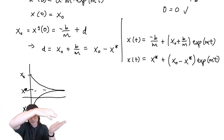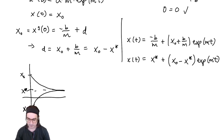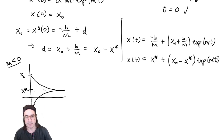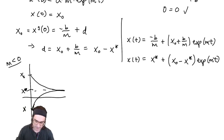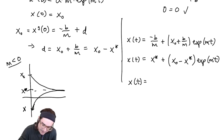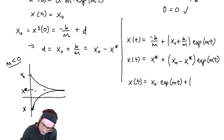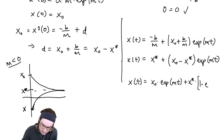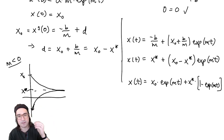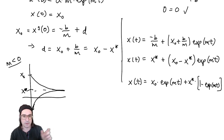We can also rewrite the solution as x(t) = x₀·e^(mt) + x*·(1 − e^(mt)). This shows a weighting that starts entirely on x₀ and shifts toward x* as t grows (in the stable m < 0 case). In the unstable m > 0 case, the direction of divergence — toward +∞ or −∞ — is determined purely by whether x₀ starts above or below x*.